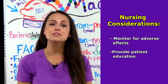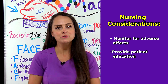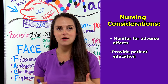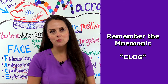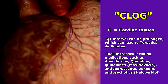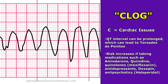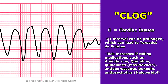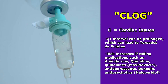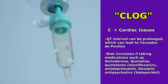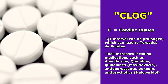Another thing you're going to be doing as a nurse is monitoring for adverse effects and educating your patient about them. To help remember those adverse effects, we're going to use the word CLOG. C is for cardiac issues, specifically a prolonged QT interval, which could lead to a deadly rhythm known as torsades de pointes. There is an increased risk of this if your patient is also taking other medications like antiarrhythmics such as amiodarone or quinidine, quinolones, or antipsychotics like Haldol.